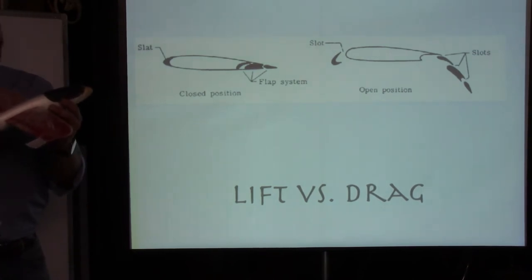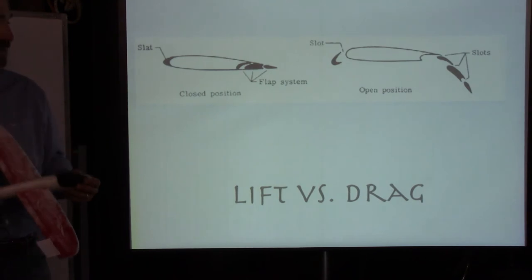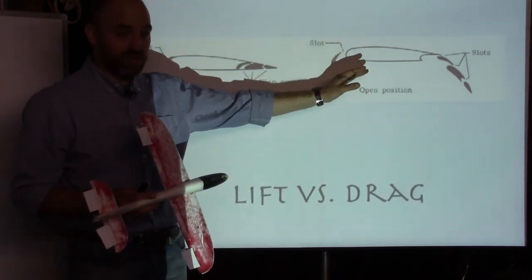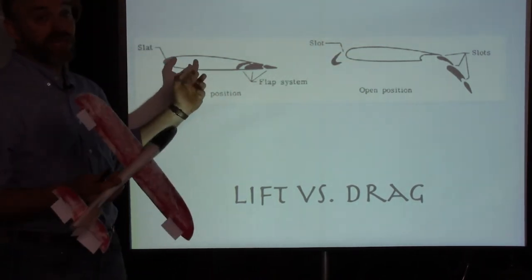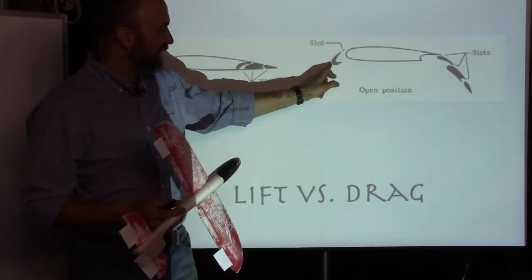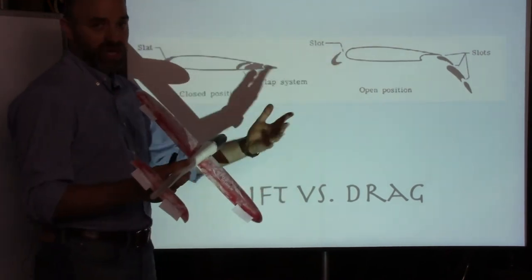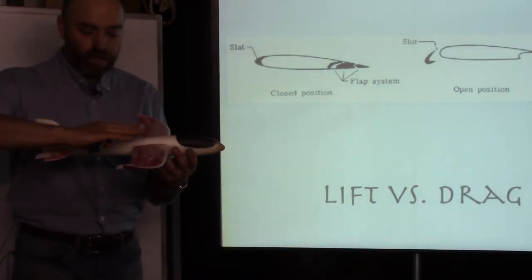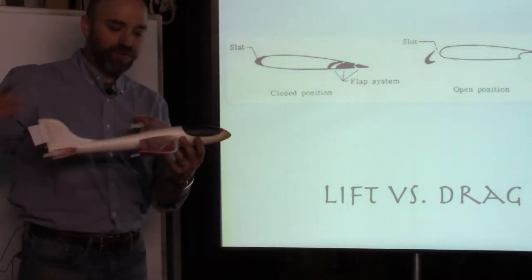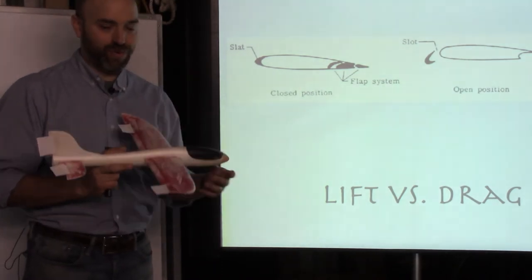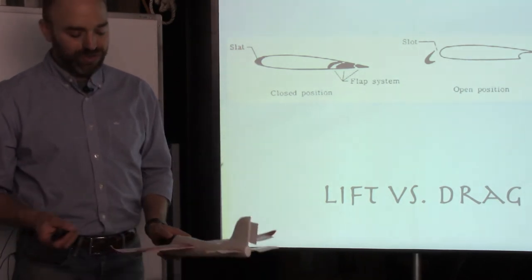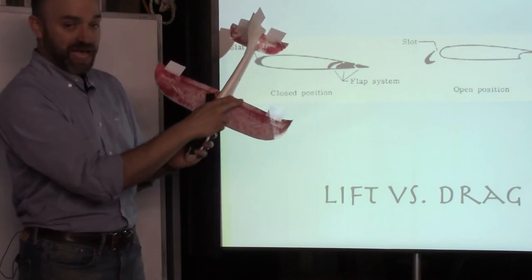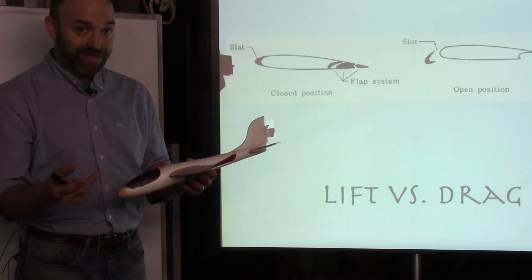With flaps and slats deployed, you don't have to point the nose so high, so you can fly at lower airspeeds and the pilot can see the runway. You might ask why not just leave the wing shaped that way permanently — but that shape produces too much friction to fly fast. For high speed you need a streamlined wing; for slow landing you need the larger shape. The slats and flaps mechanism lets the wing take both shapes as needed. They're also used on takeoff.